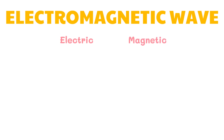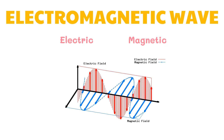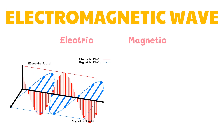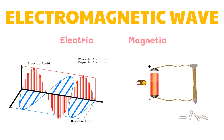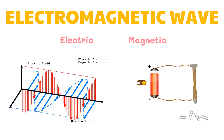As the name electromagnetic waves suggests, it is considered to be both electric and magnetic in nature. An electromagnetic wave contains an electric field and a magnetic field. Electric and magnetic fields are the regions through which the push or pull of charged particles and magnets is exerted. Charged particles and magnets can push or pull certain objects without even touching them.